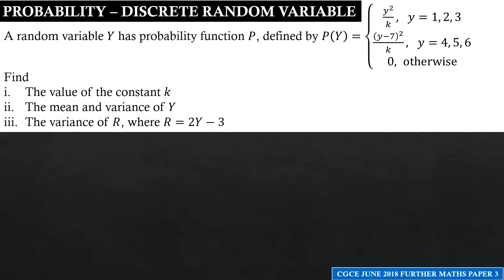Specifically the June 2018 paper. The question states: a random variable Y has probability function p defined by p(Y) = y²/k for y = 1, 2, and 3; (y−7)²/k for y = 4, 5, and 6; and zero otherwise. Find: (i) the value of the constant k, (ii) the mean and variance of Y, (iii) the variance of R where R = 2Y − 3.